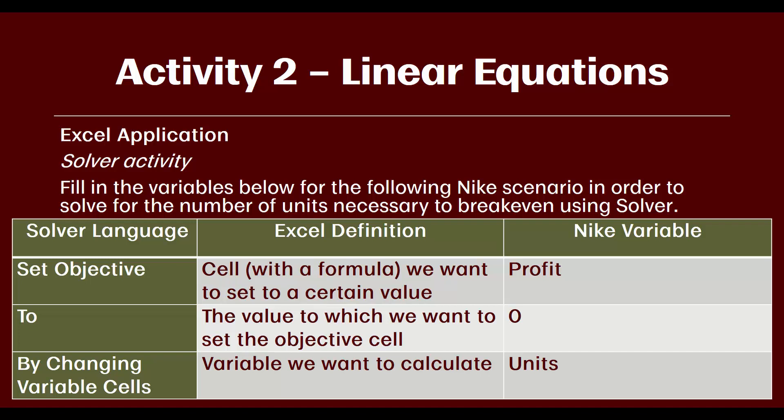In the case of a break-even analysis, our goal is to set profit, so I reference that here with a Nike variable. We're trying to set profit equal to zero. So in our spreadsheet, we will need to have a cell that calculates profit for us using a formula. Remember, the rule is that this set objective cell has to have a formula in it. So we'll have a formula that calculates profit, and we'll tell Excel that we want that profit calculation to equal zero.